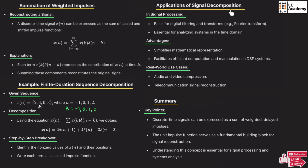There are different applications of signal decomposition in the field of signal processing. Signal decomposition is the basis for digital filtering and transforms — for example, the Fourier transform. It is essential for analyzing signals in the time domain. The advantages include simplified mathematical representation and efficient computation and manipulation in digital signal processing systems.